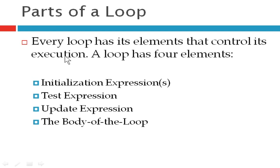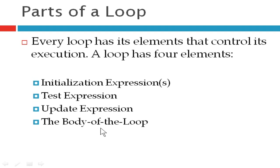Before going to for loop, you are going to see what are the different elements used in a loop. We have four elements: initialization expression, test expression, update expression, and the body of the loop.